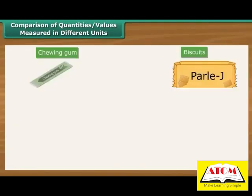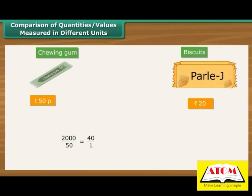Hari has bought a chewing gum for 50 paise. His friend Shiv has bought a packet of biscuits for Rs. 20. Who spent more money and by how many times? Before comparing, we express Rs. 20 as 2000 paise. Now we can work out the ratio: 2000 by 50 is 40 by 1, which is equal to 40 is to 1. We can therefore say that Shiv has spent 40 times more money than Hari.